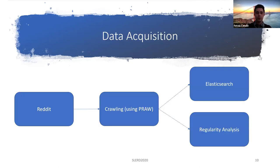For data acquisition, we crawled Reddit using a library called PRAW, which is a wrapper around the Reddit API that allows us to extract data anonymously. After that, we sent the data into an Elasticsearch cluster. For each analyzed community, we created a separate index in Elasticsearch. Apart from this, we also generated the regularity analysis, which is only based on the timestamps of comments, so as we crawled data from Reddit we already had access to those timestamps.